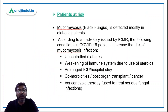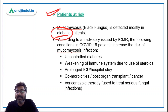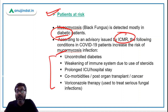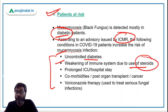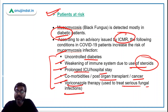Talking about patients who are at risk — it is mostly detected in diabetic patients. According to the advisory issued by ICMR, patients at risk include those with uncontrolled diabetes, those whose immune systems are weakened due to steroid use during COVID-19, prolonged ICU or hospital stays, comorbidities, post organ transplant, cancer, or those undergoing voriconazole therapy to treat serious fungal infections.